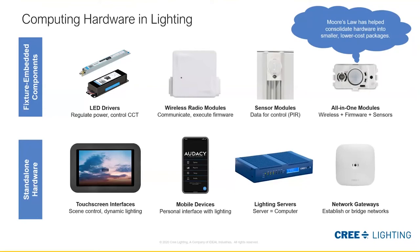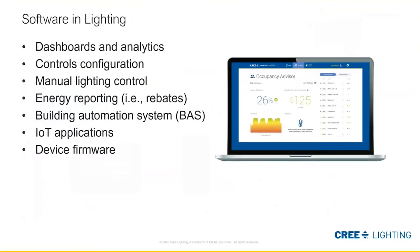We've got a wide variety of computing components in our products today. You probably already thought of at least one thing when you think of software and lighting — here's a pretty typical example of a dashboarding system that gives different types of analytics about the system itself or about our building space. It may even help us get more rebate dollars from utility companies if we can report energy performance.